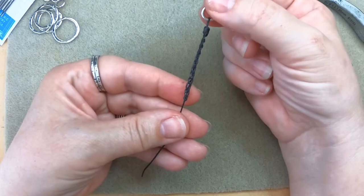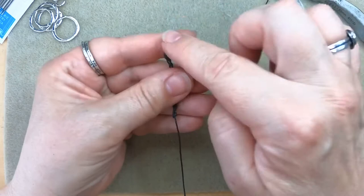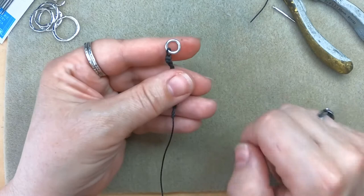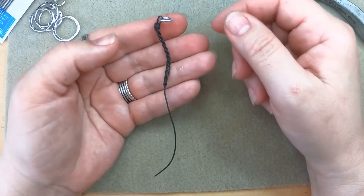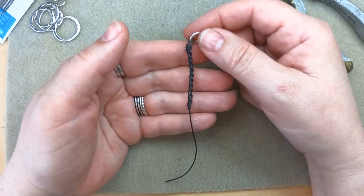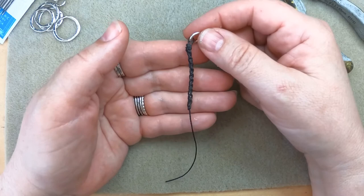From here you can attach your clasp, or you can knot a piece of leather around this if you want an adjustable back on it and do some sliding knots, or however you wish to end your work. Thanks for joining us, and please take a look at all of our kits and tutorials at PumpkinGlass.com, and we have a lot of free tutorials at Pumpkin Glass Galleries YouTube page. So long.